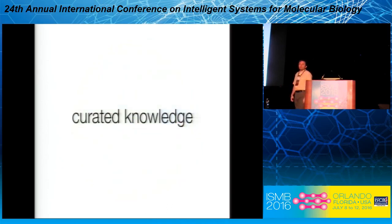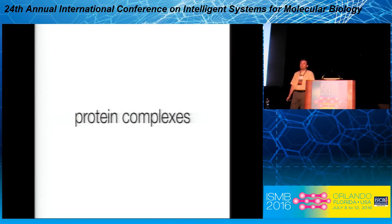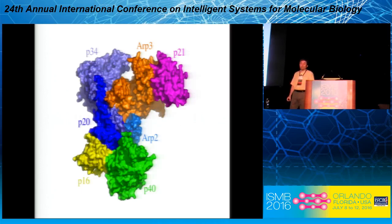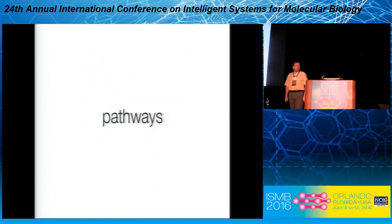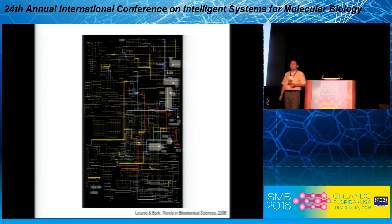Last but not least, we take the low-hanging fruit: the curated knowledge. There are things like protein complexes — not just somebody's yeast-two-hybrid screen claiming these two proteins bind, but things we know beyond doubt: a complex with a name, we know what it does, we possibly have a 3D structure of it. Another thing is established pathways — things that exist in databases like KEGG, Reactome, and others. We collect from many of these different databases and put them into the STRING database.